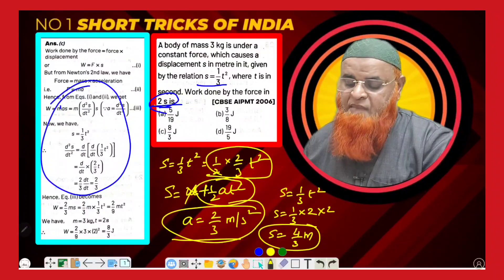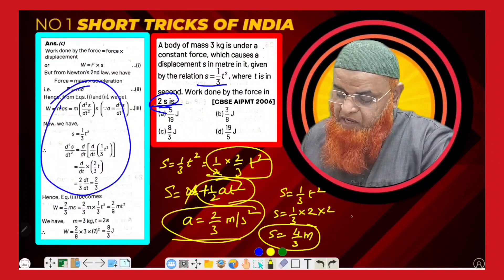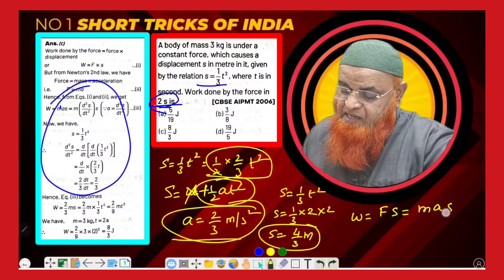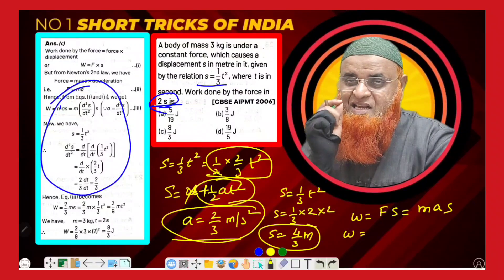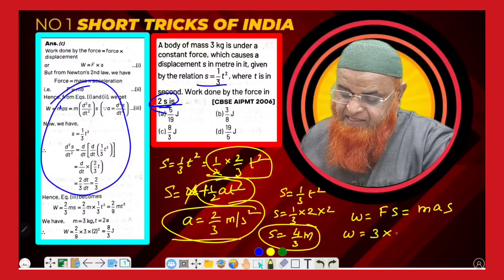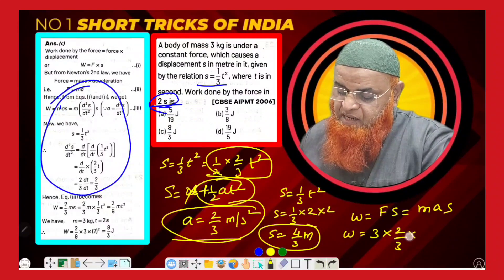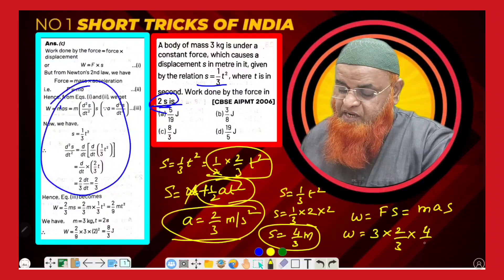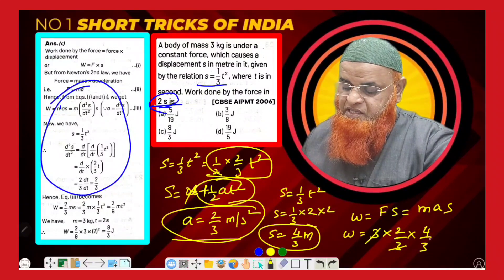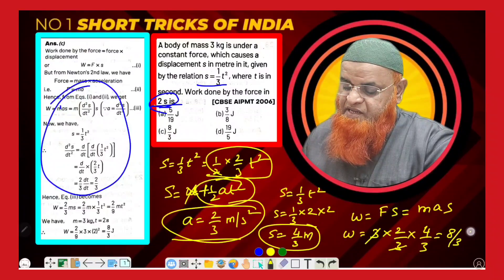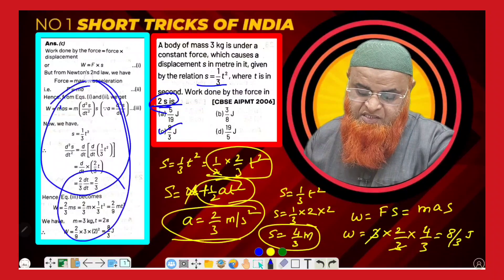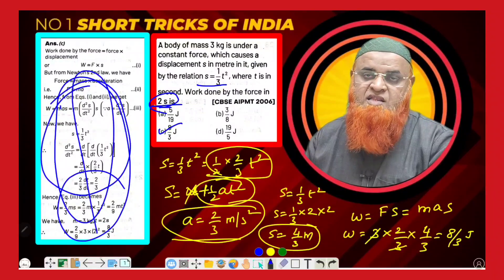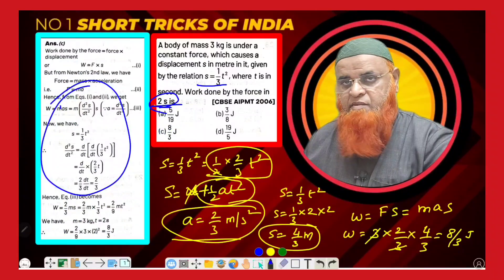So we got displacement as 4/3 and acceleration as 2/3. Then directly we can apply the formula: work done = force × displacement = mass × acceleration × displacement. Mass is given as 3 kg, acceleration is 2/3, and displacement is 4/3. The 3s cancel, and the answer is 8/3 joules — which is option C, the correct option. This lengthy method in the book should be avoided in the examination.